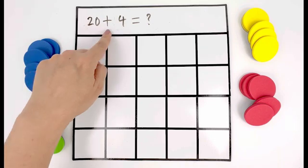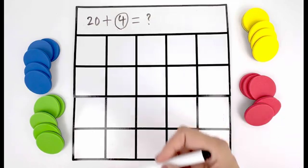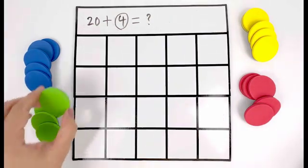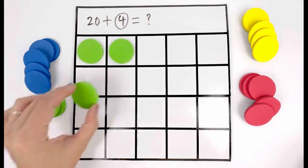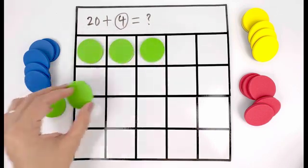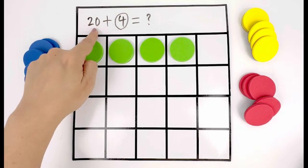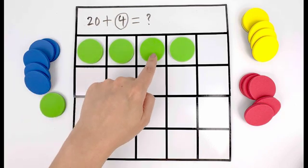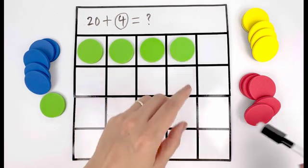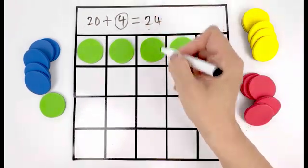Let's keep number fifteen and only count four circles. One, two, three, four. Twenty, twenty-one, twenty-two, twenty-three, twenty-four. Twenty plus four equals twenty-four.